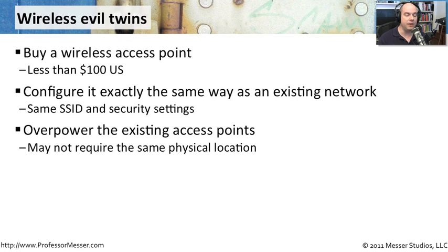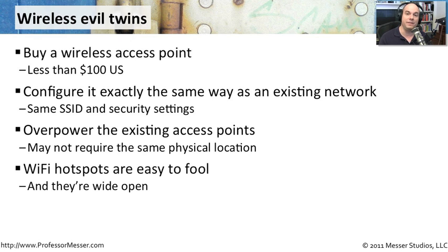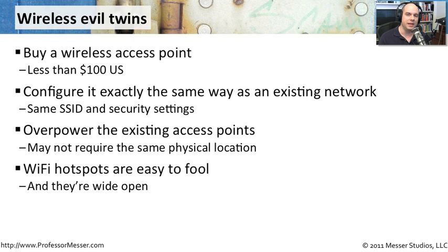Once connected, you're able to see everything. This is very easy to do in places where there are open Wi-Fi hotspots. Once users are connected to the evil twin, all traffic flowing between them and the regular network flows through the evil twin, which means anyone controlling it can see everything going over that link — creating enormous security concerns.